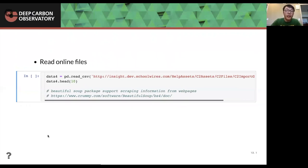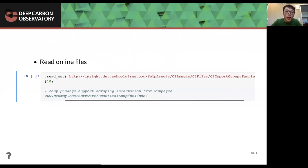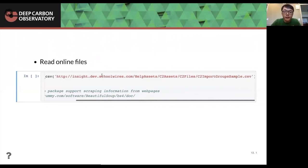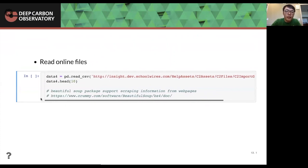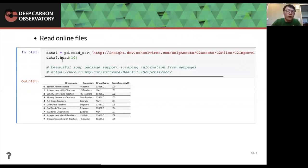And also we can read online files. Here is a link I found from random website and it's a CSV file. We can directly put a link in the, we can directly put this link into the panda read CSV function. It will automatically take this link and save the CSV file into our data four. And we can, I can show you the top 10 rows by default. It will show you the five rows. If you want to show more than five, you can show, if you want to show any number other than five, you can put a number here. It will show you the information from the data frame.